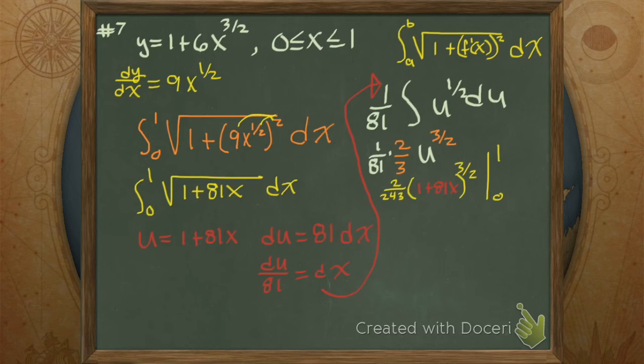Now it's the fundamental theorem of calculus, upper minus lower. So what's upper? 1. And what's lower? None.